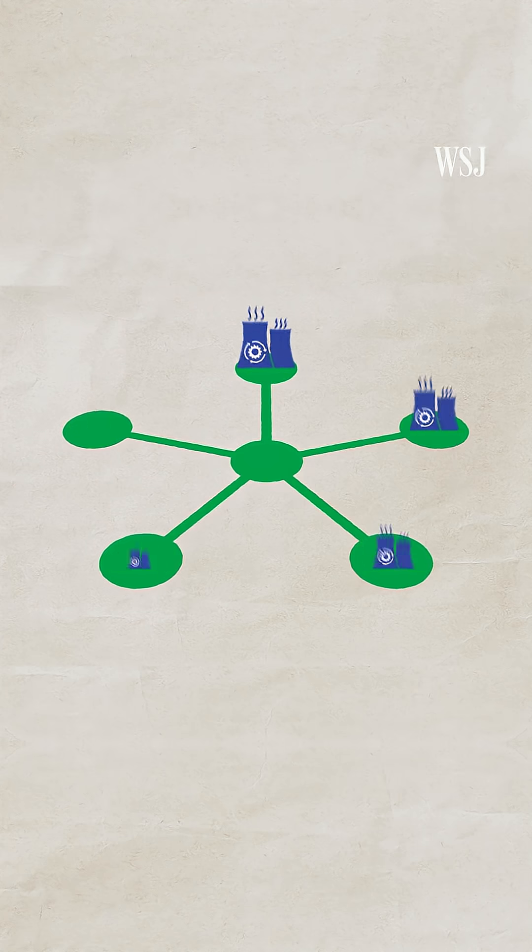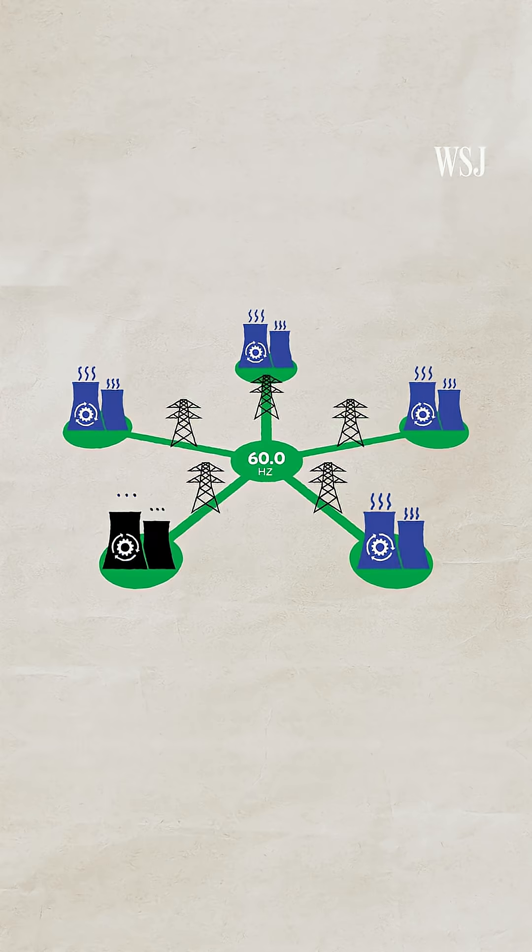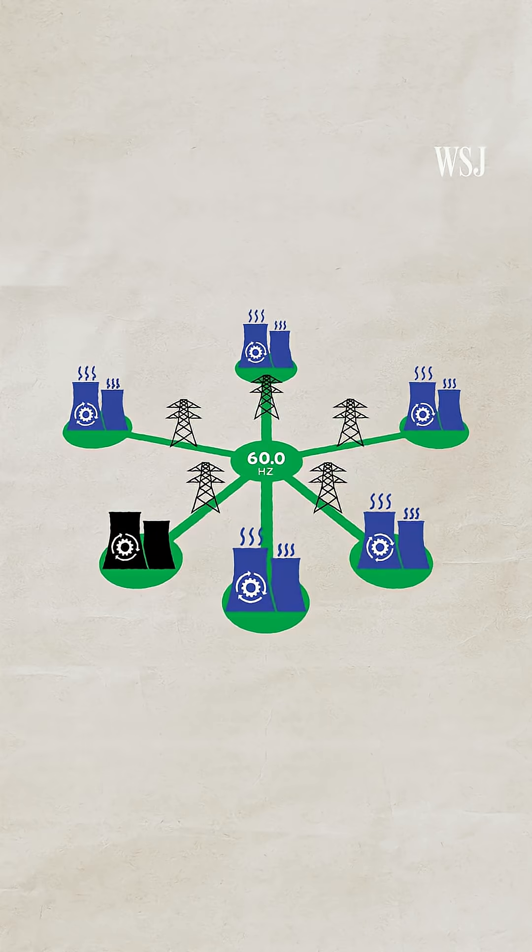All conventional power plants produce electricity that matches the frequency on the grid, which is 60 hertz in the U.S. If a power plant goes down, the inertia provides buffer time for other energy sources to jump in. The grid can only tolerate a small change in frequency.